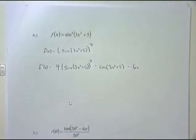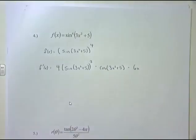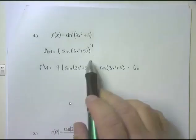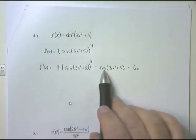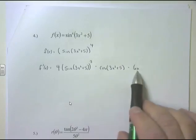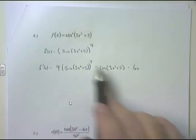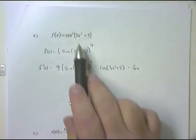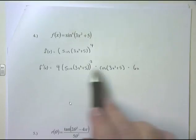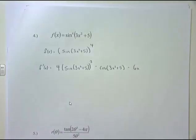What we have here is a chain rule within a chain rule — these combo rules are the more advanced problems. You take the derivative of the outside, the inside stays the same, and keep taking the derivative of the insides until you run out of insides. Also notice: when dealing with trig, the angles never change. The trig functions change due to the derivative, but the angle remains 3x² + 5 on both the sine and the cosine. Finally, times 6x, the derivative of the innermost inside.